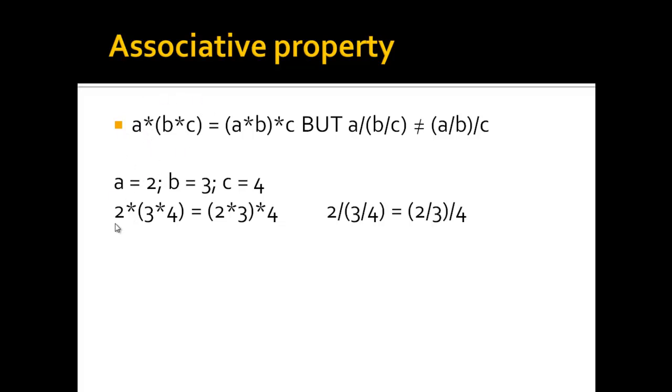And then we put in these numbers where the variables or where the letters are. So here a is 2, so 2 times 3 times 4, that would then be 12. So 2 times 12 is 24, or 2 times 3 is 6, 6 times 4 is also 24. So here the result stays the same.